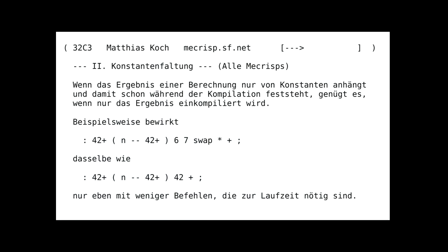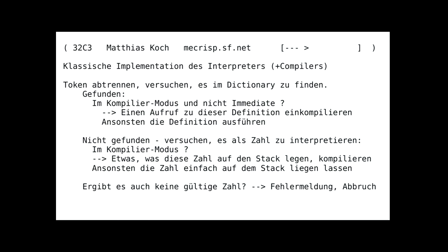Here is an example where you just put 42 on the stack and then also put negation and subtraction and some other things, and in the end you can already execute this code at compile time. It is pretty obvious in this case that you can use it, and also with the help of other optimizations it might be possible to create a situation where constant folding suddenly becomes possible.